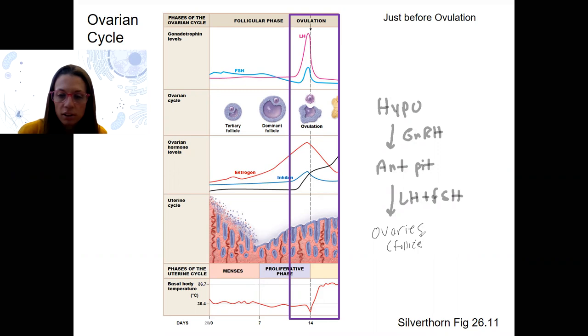And now this follicle is producing super, super, super high estrogen. That's right here, right? You can see that. We're just before ovulation. That super high estrogen is going to result in a switch from negative feedback to positive feedback.